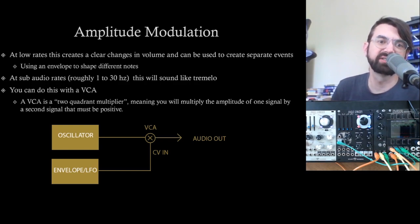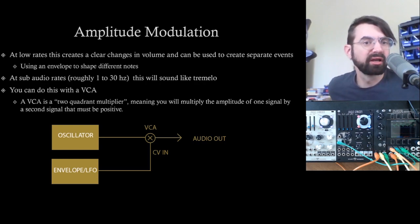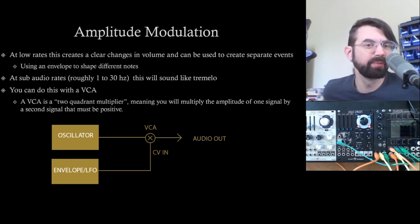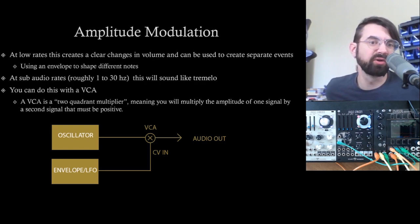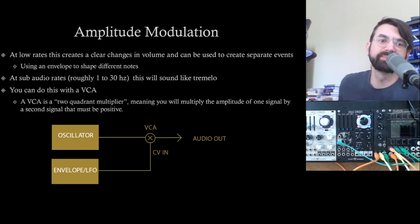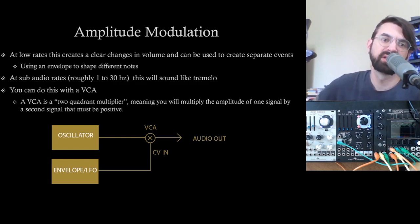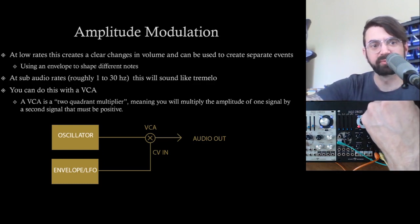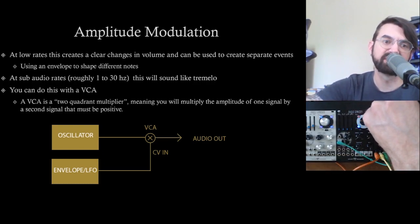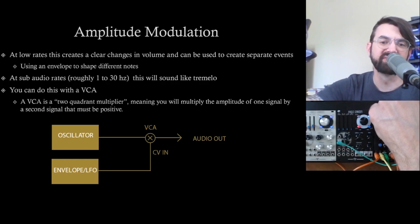Amplitude modulation comes in a bunch of different forms. The biggest differences are really whether the modulation is at or below audio rate. Below audio rate, the form you're most familiar with is when you apply an envelope or an LFO to a VCA and you create separate notes, or just use it to control the volume of the signal.